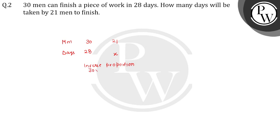So what will happen here? 30 multiplied by 28 is equal to 21 multiplied by x. To find x, we calculate 30 multiplied by 28 divided by 21. Since 7 is divisible — 7 times 3 is 21 and 7 times 4 is 28 — so 10 into 4 is 40. So how many days will it be? 40 days.